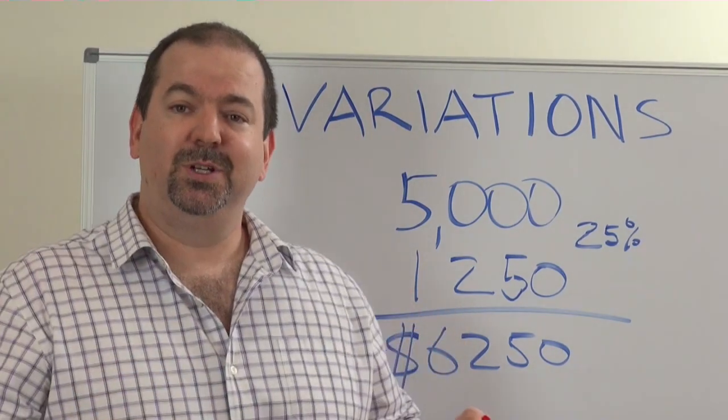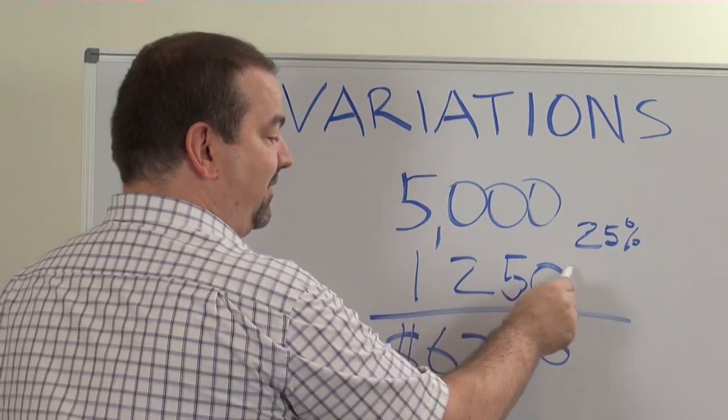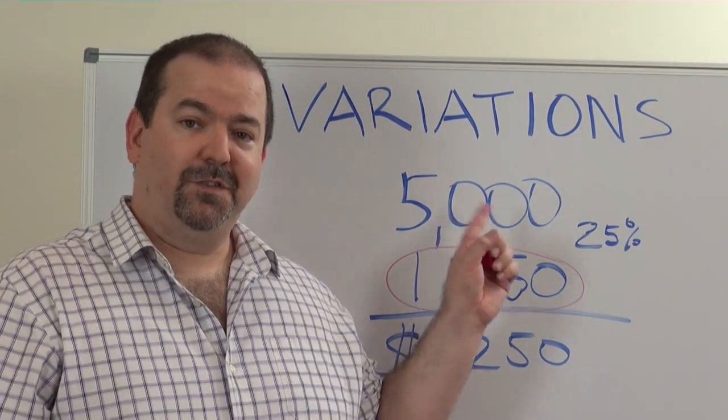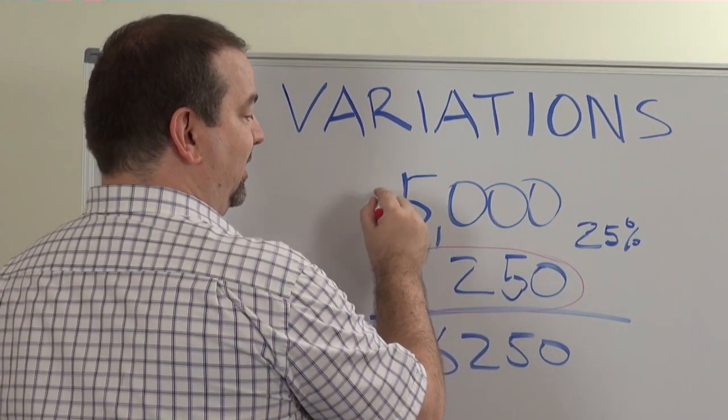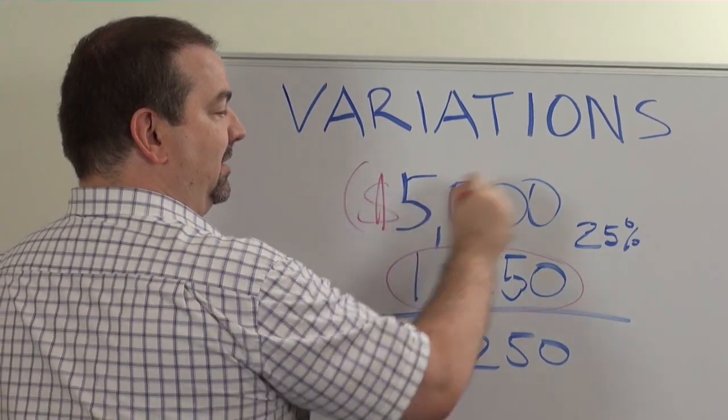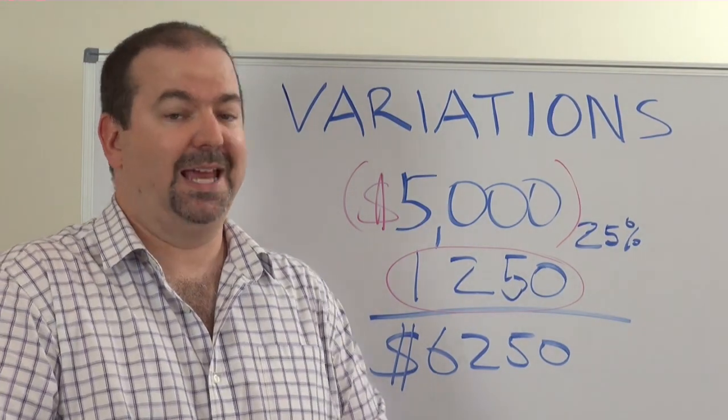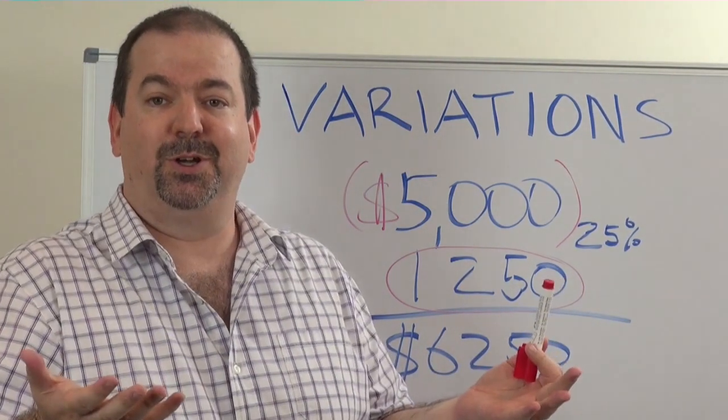But according to the building contract, the builder doesn't have to give you back this amount. So what you'll often find is you'll get a credit of five thousand dollars, but the builder will keep the twelve hundred fifty dollars and they're entitled to. That's what's in the building contract.